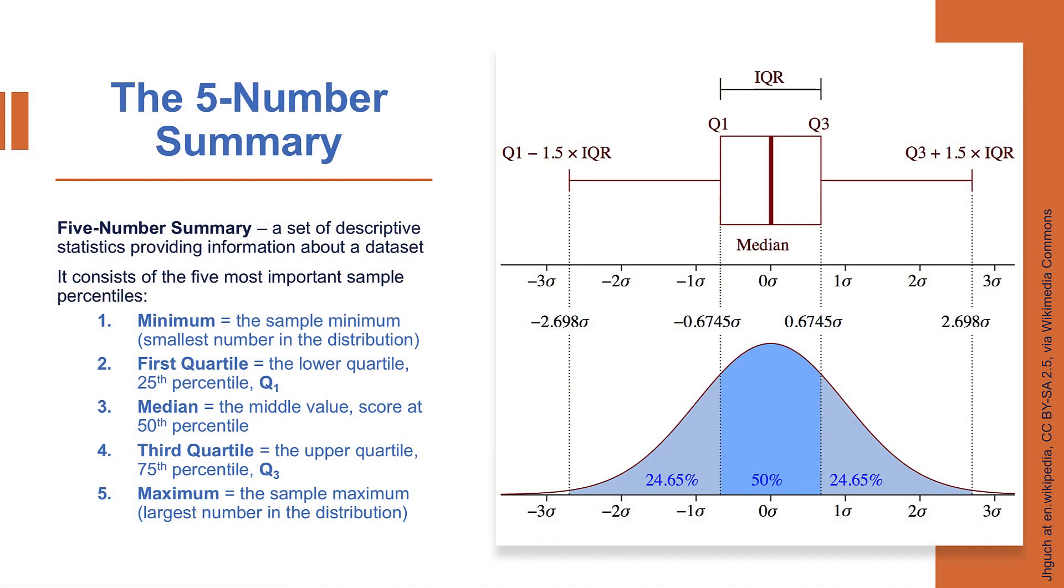What is a five-number summary? It is a set of descriptive statistics that provide information about our data set, and as you may be able to determine from the name, the five-number summary consists of five numbers, the five most important sample percentiles. The minimum, which is the smallest number in the distribution, the first quartile, which is the 25th percentile or quartile one, the median or middle score, the third quartile or the 75th percentile, q3, and the maximum, the largest number in our distribution.